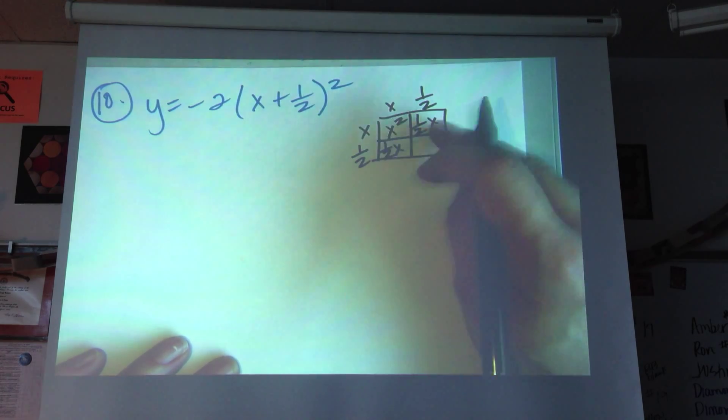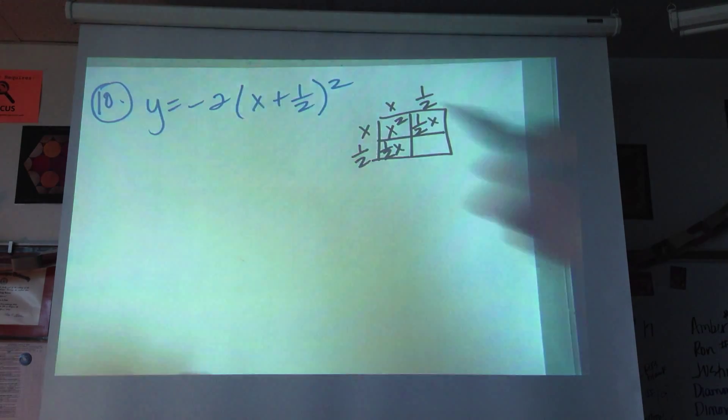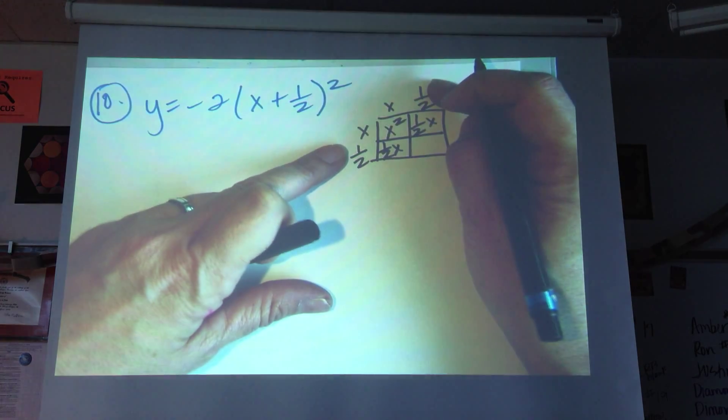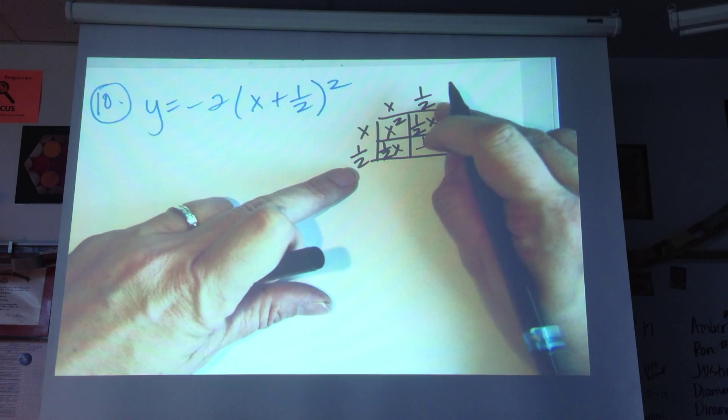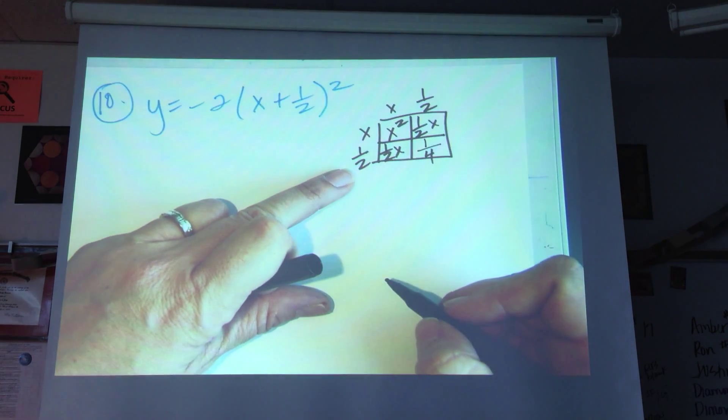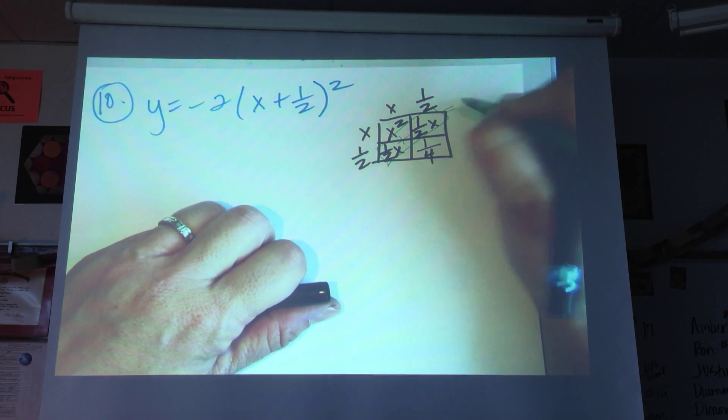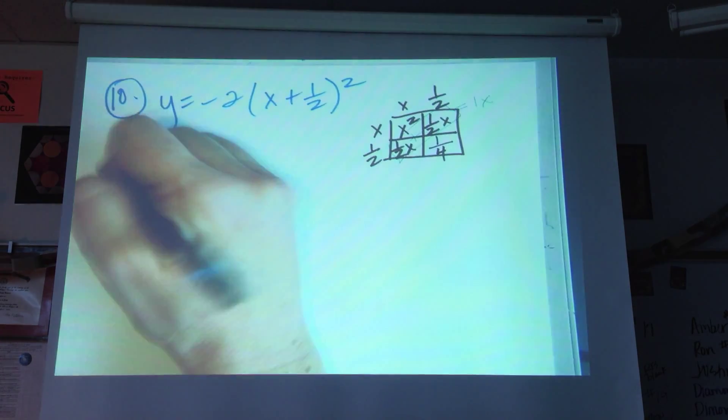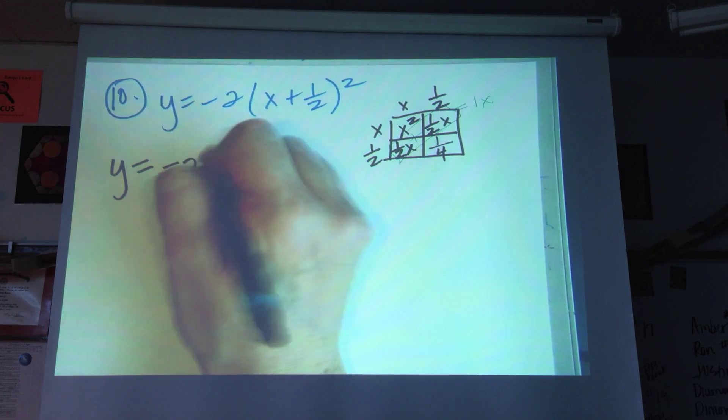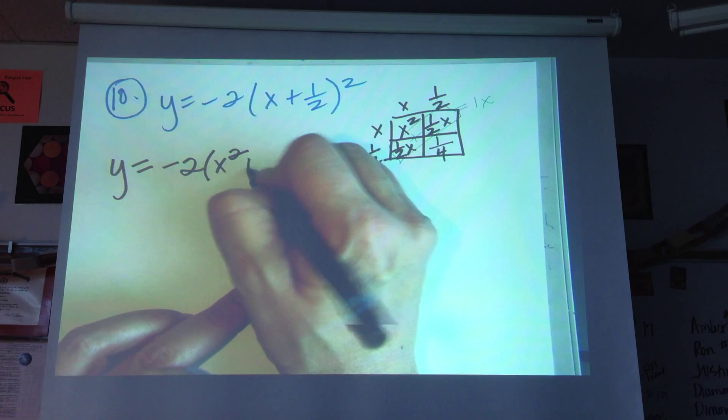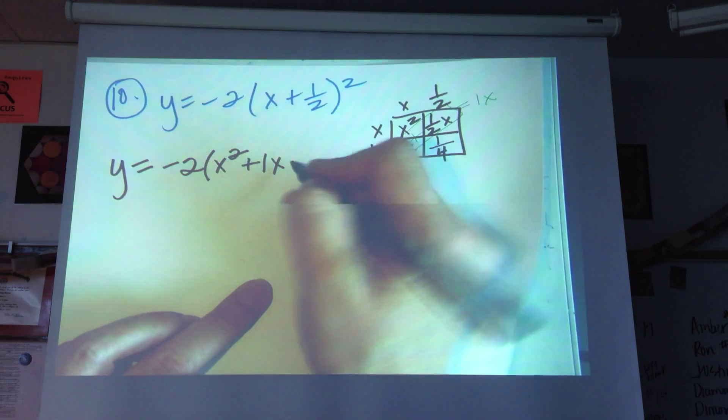What's a half and a half when I put them together? One. Yeah, right. And, what's a half times a half? What's 1 times 1 over 2 times 2? Four. So, got that this is 1x. So, when I go and pull this out, y equals negative 2 times x squared. A half and a half give me 1x plus a quarter.